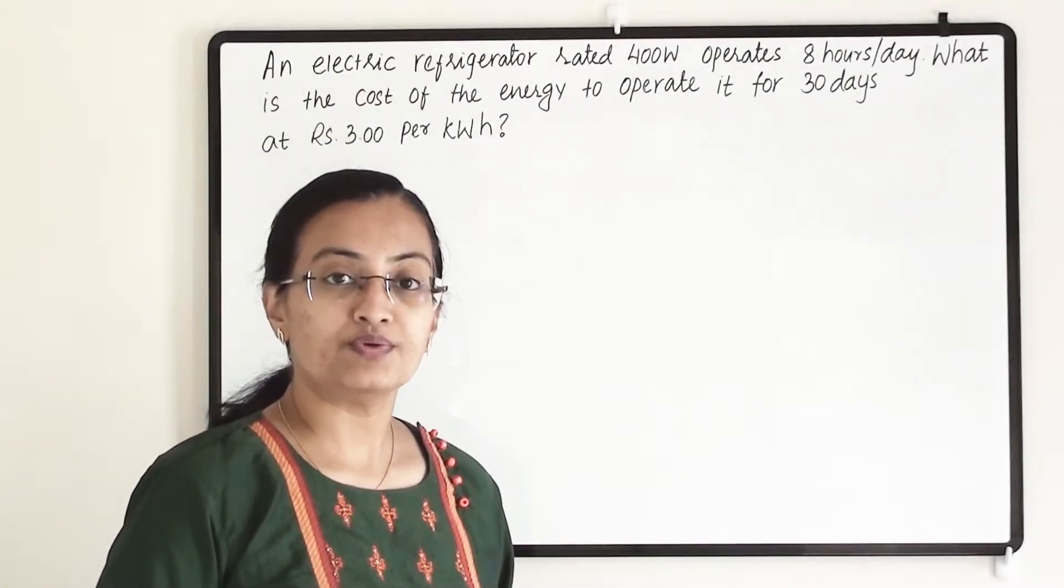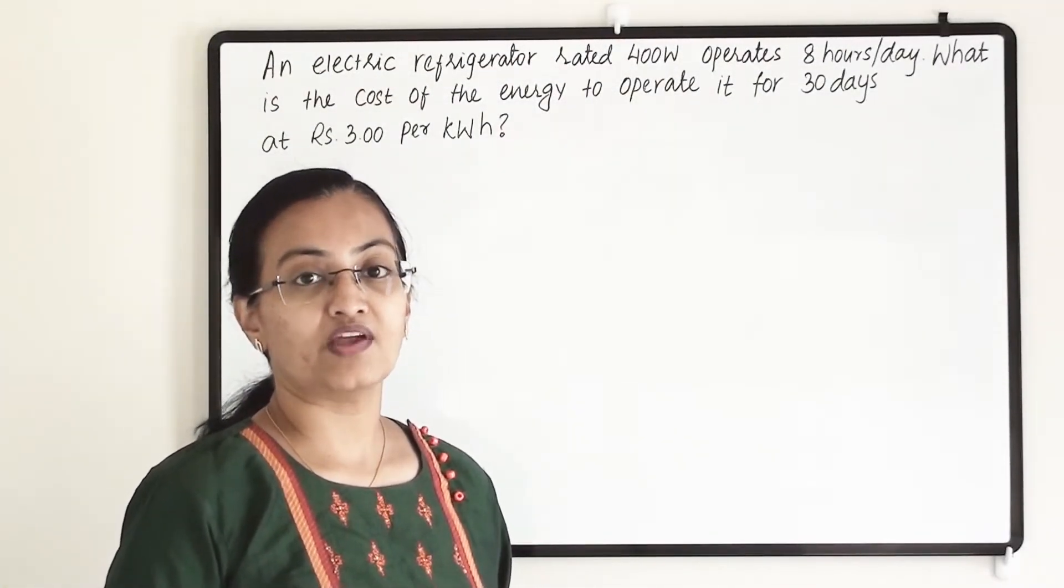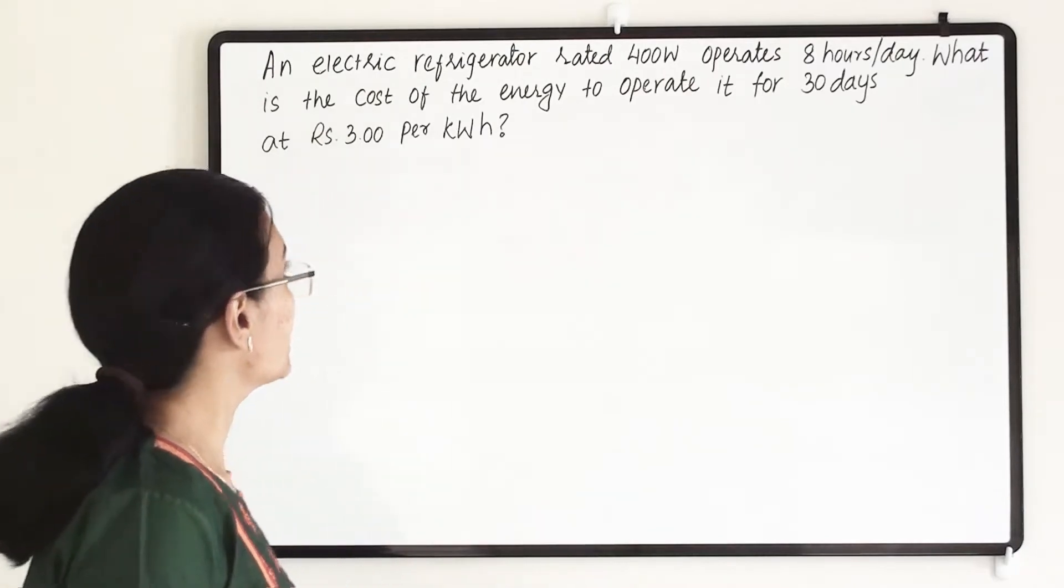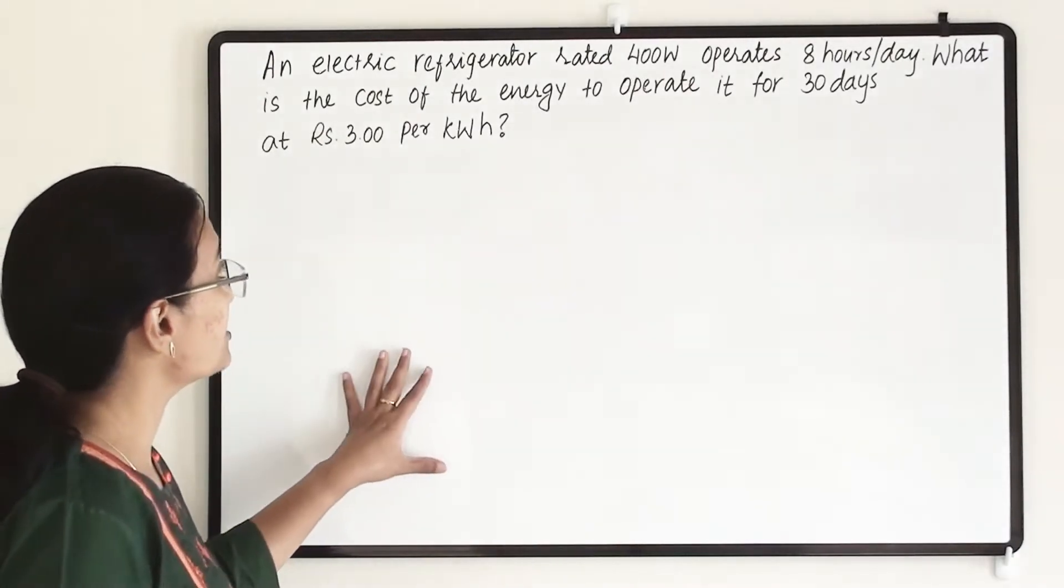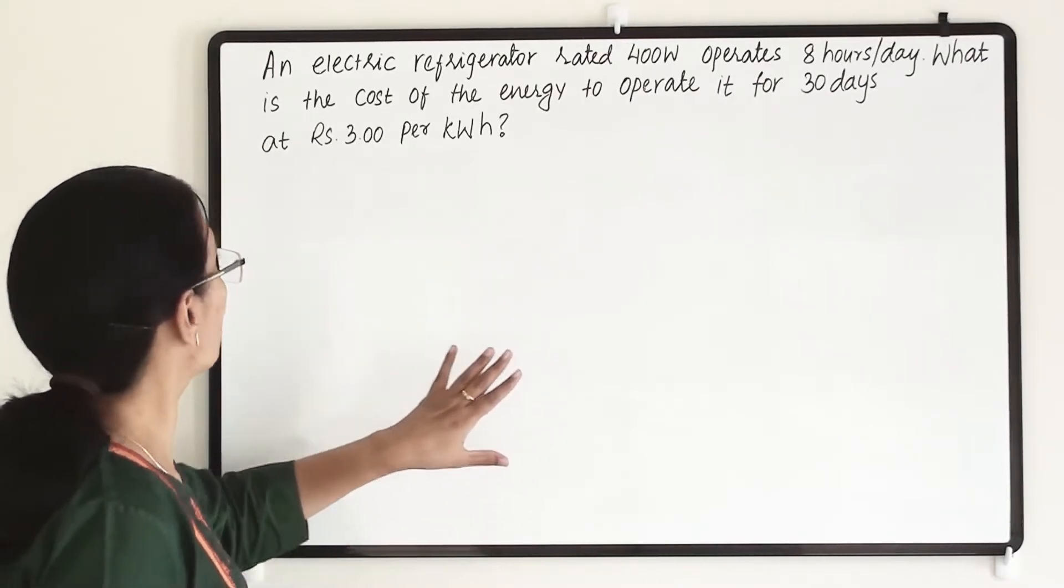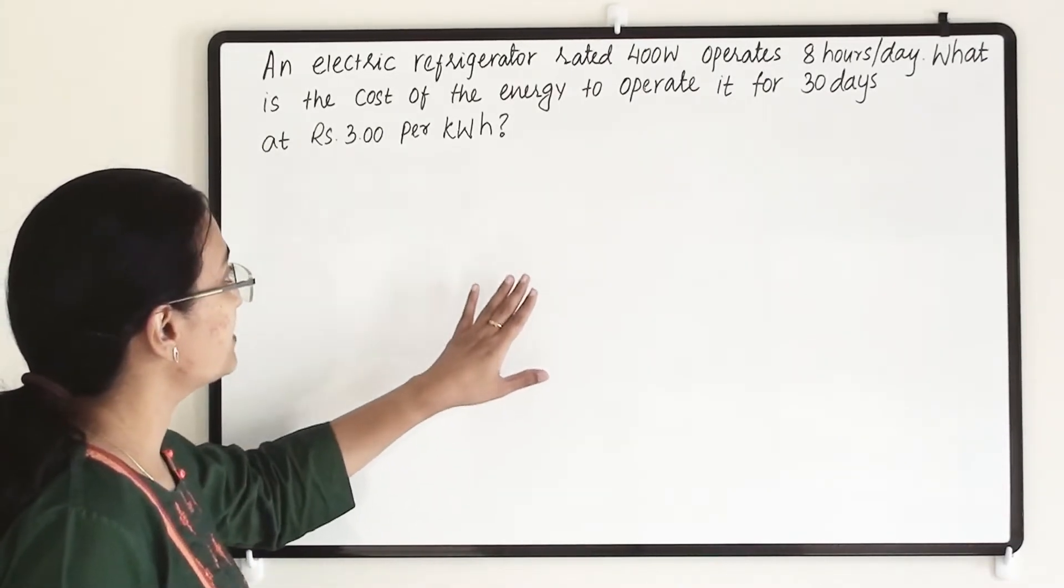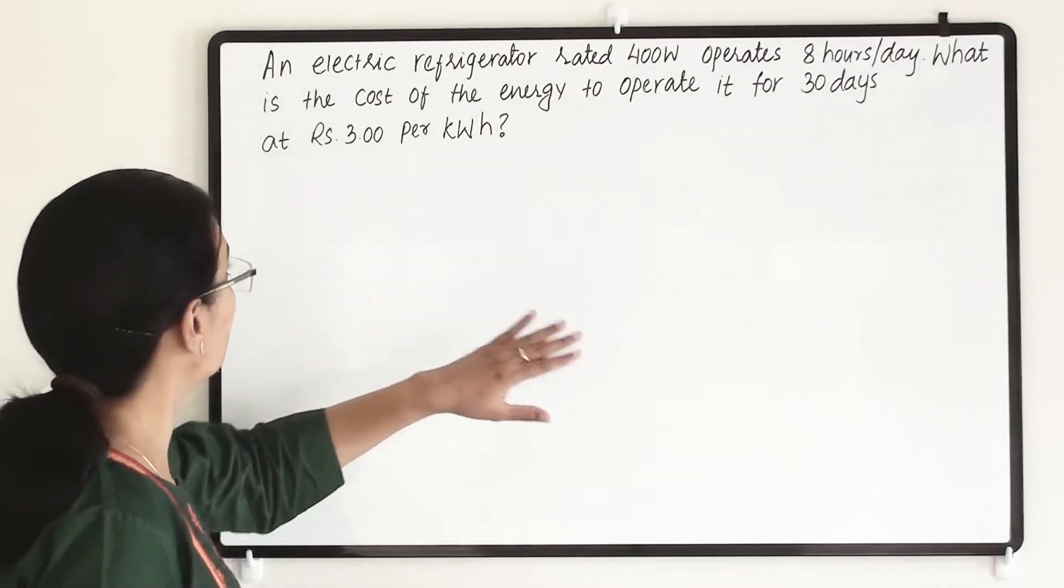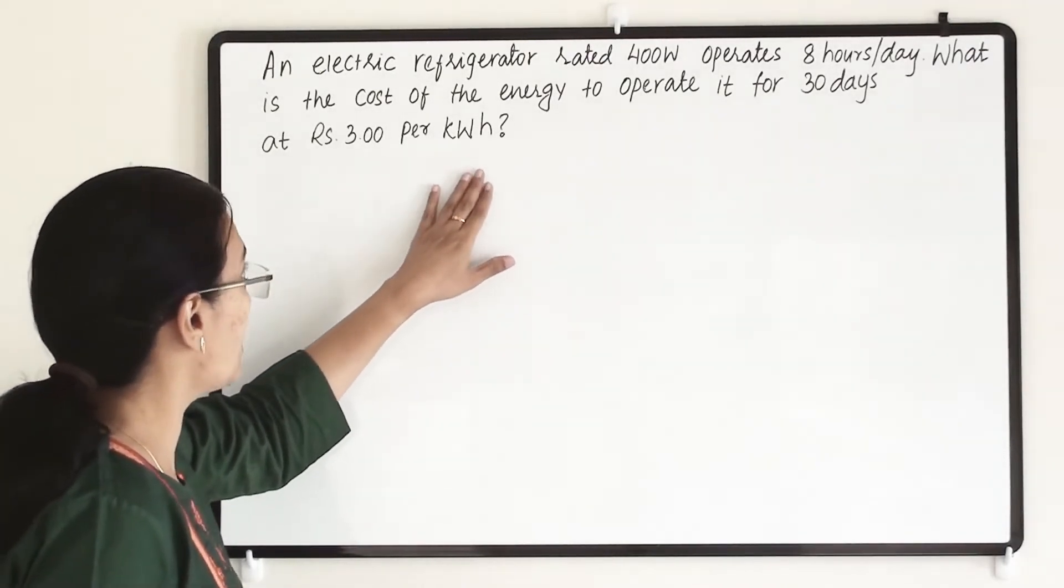Welcome to Learn Yourself. Today we are going to learn and understand solved example 12.13. It says that an electric refrigerator rated 400 watt operates 8 hours per day. What is the cost of the energy to operate it for 30 days at rupees 3 per kilowatt hour?